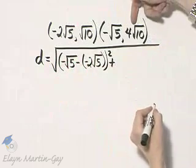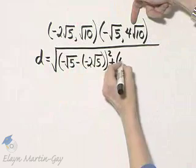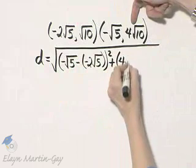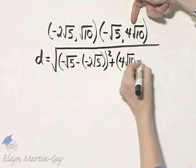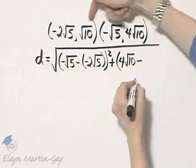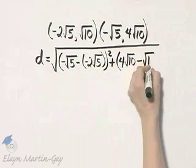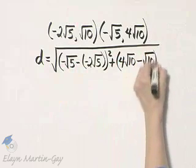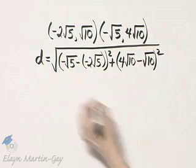Plus this y value, 4 square root of 10, minus this y value, square root of 10, and that quantity is squared.